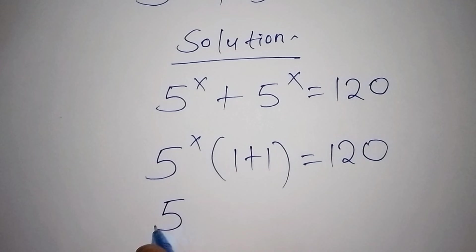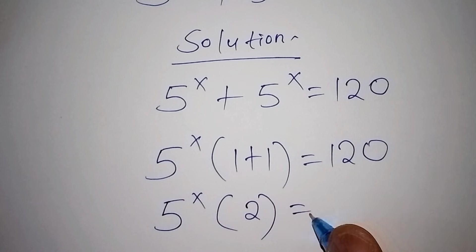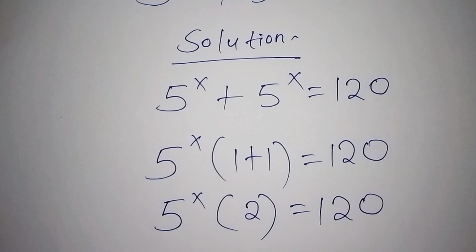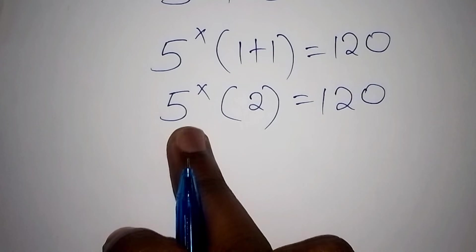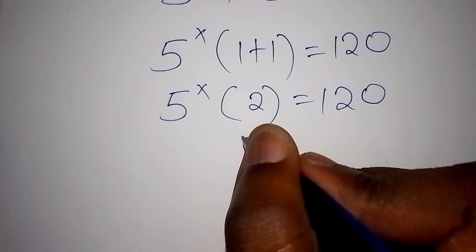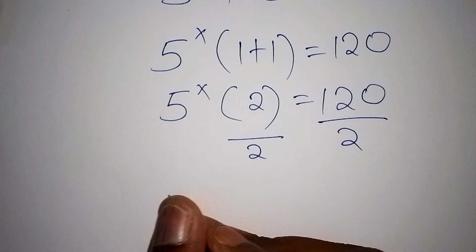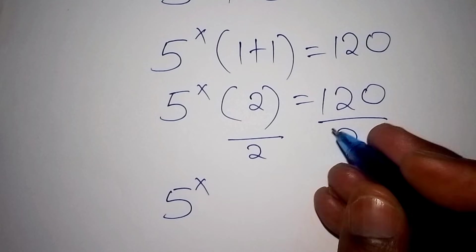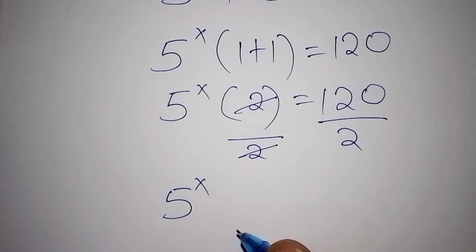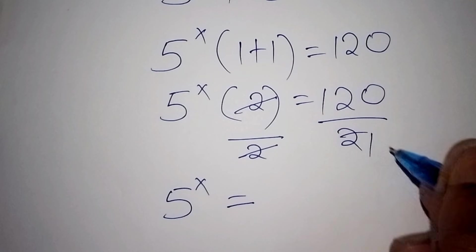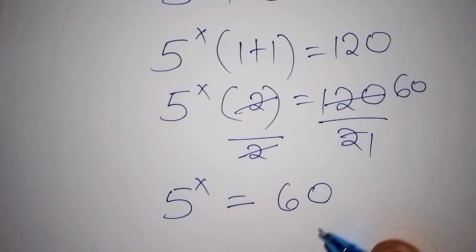Now we have 5 to the power of x, then into the bracket 1 plus 1 equals 2, so 5 to the power of x times 2 equals 120. The next thing is to divide both sides by 2 so that we remain with 5 to the power of x. The 2s cancel, and 120 divided by 2 gives us 60. So 5 to the power of x equals 60.